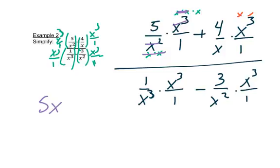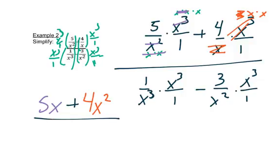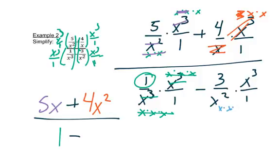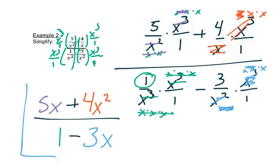For the second term, 4 over x times x cubed: one x cancels one x, leaving 4x squared. For the next term, 1 over x cubed times x cubed: all three cancel, leaving just 1. For the final piece, two x's cancel two x's, leaving 3x. Although it looks messy, this is our final answer — all of the small fractions are gone.